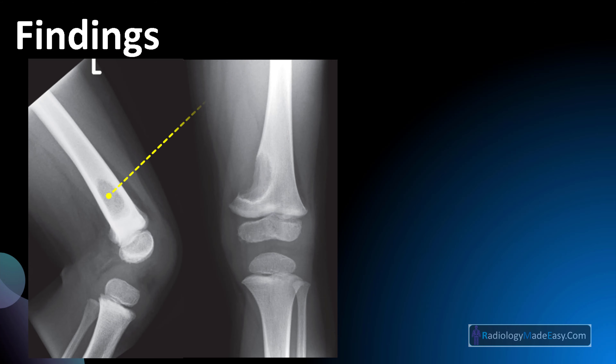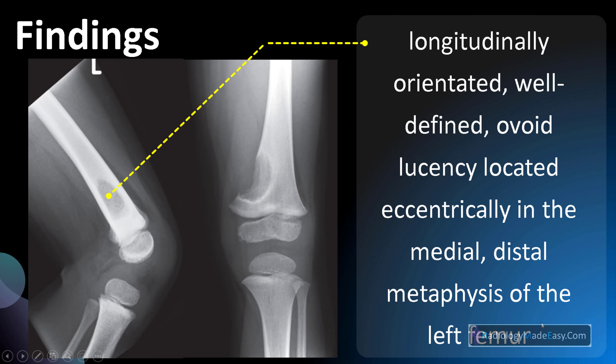I will take a pointer so you can see clearly. In this film you can see there is a longitudinally oriented and well-defined ovoid lucency which is located eccentrically in the medial distal metaphysis of the left femur.